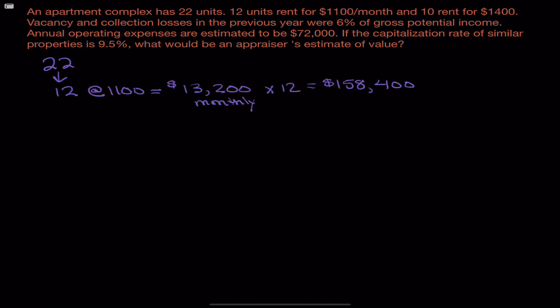The other units, 10 of them, rent at $1,400 a month. So that means monthly, they would bring in $14,000. And again, we need an annual amount. So that's going to give us $168,000. When you add both of those numbers together, you get an annual amount of $326,400. And that is our potential gross income.